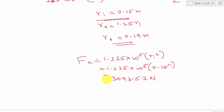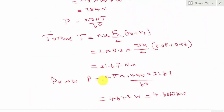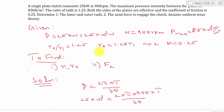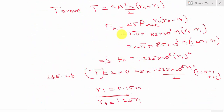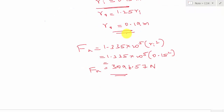So FA = 3096.57 N. The difference between the previous problem and this one: in the previous problem FA, RO, and RI were given and we calculated power. In this problem, power was given and we calculated RO, RI, and FA. That is all. Thank you.